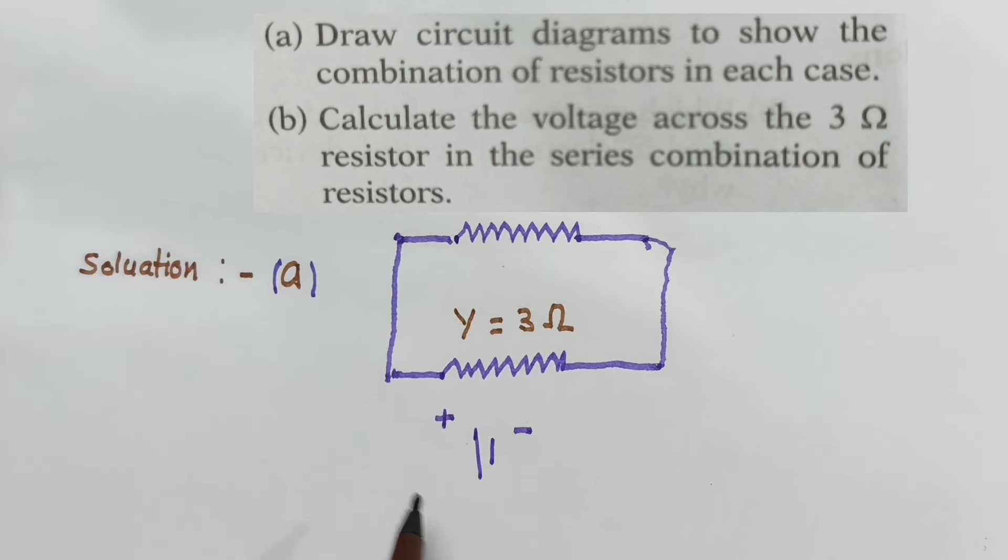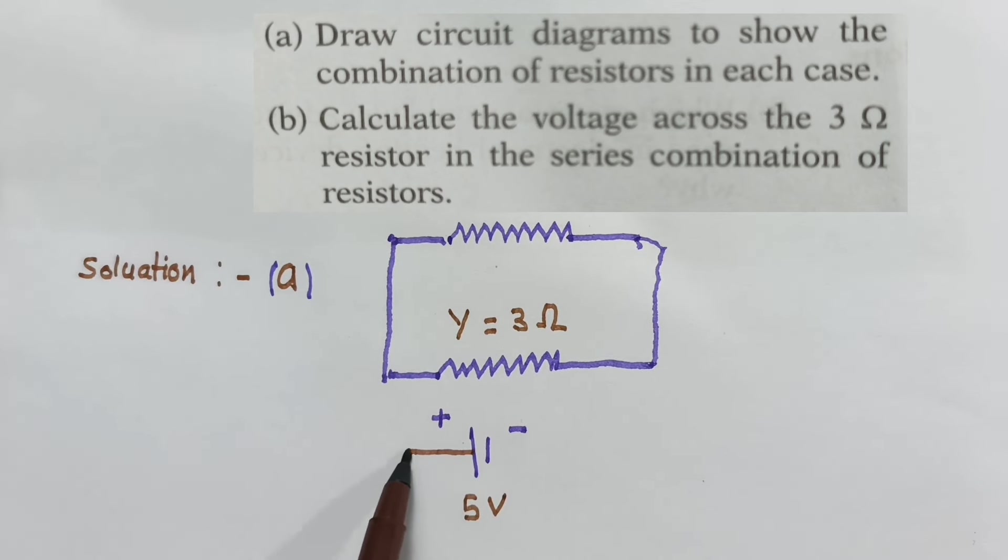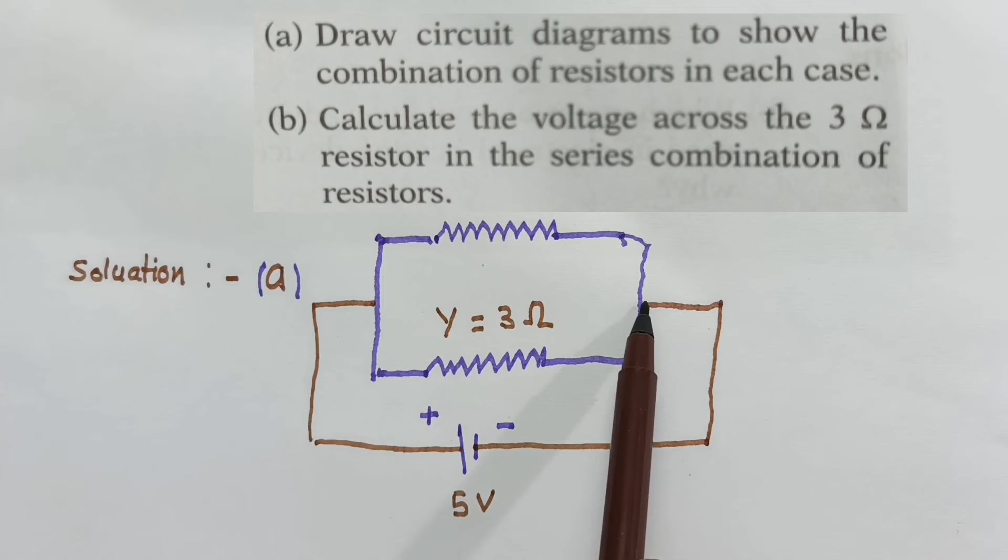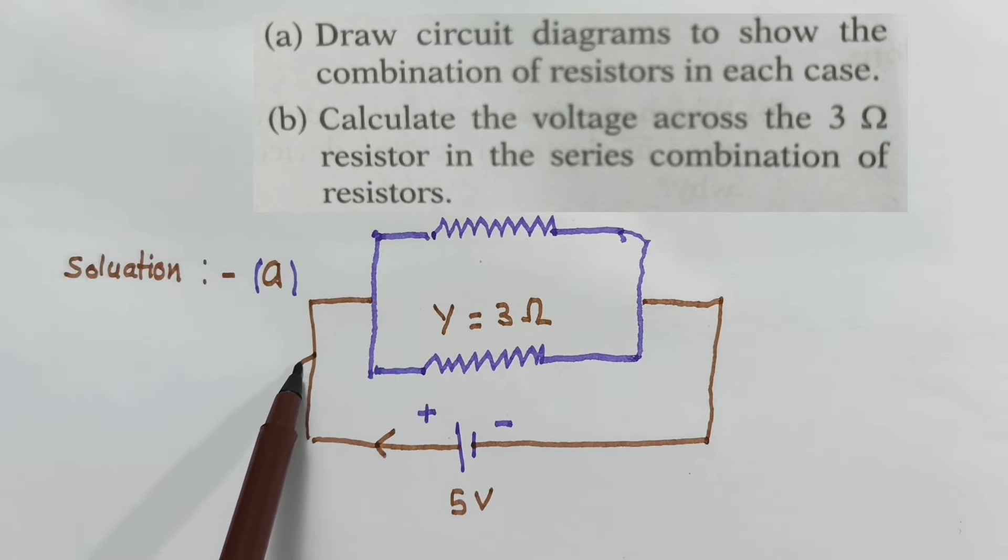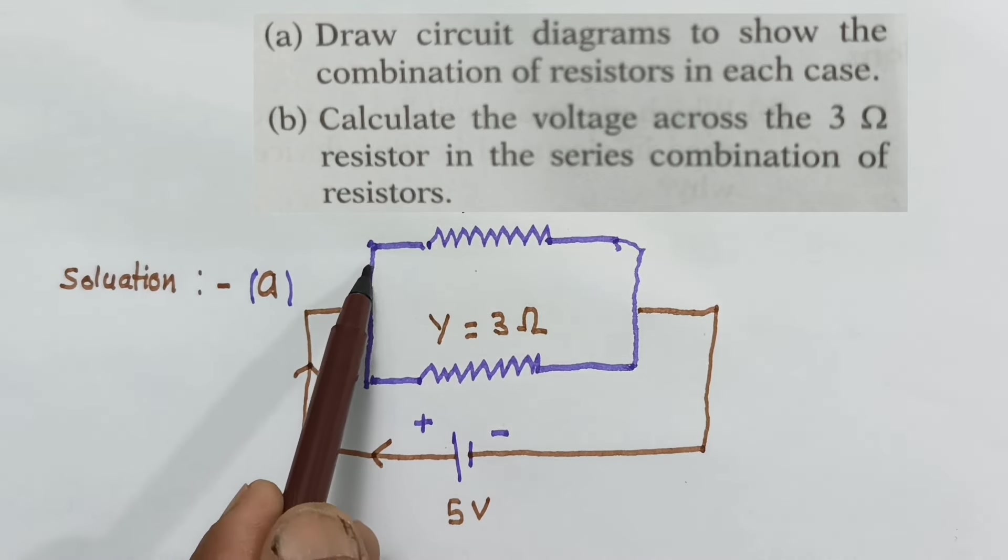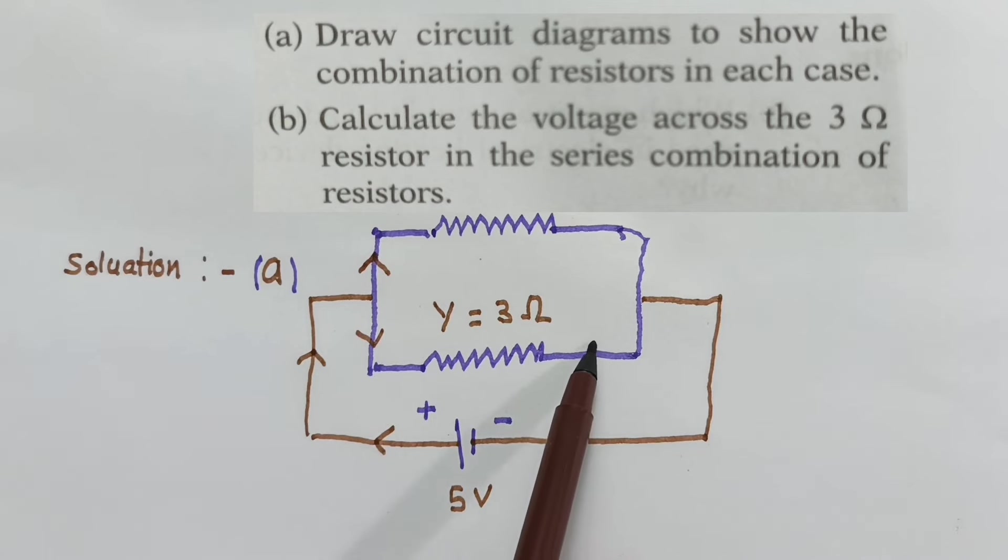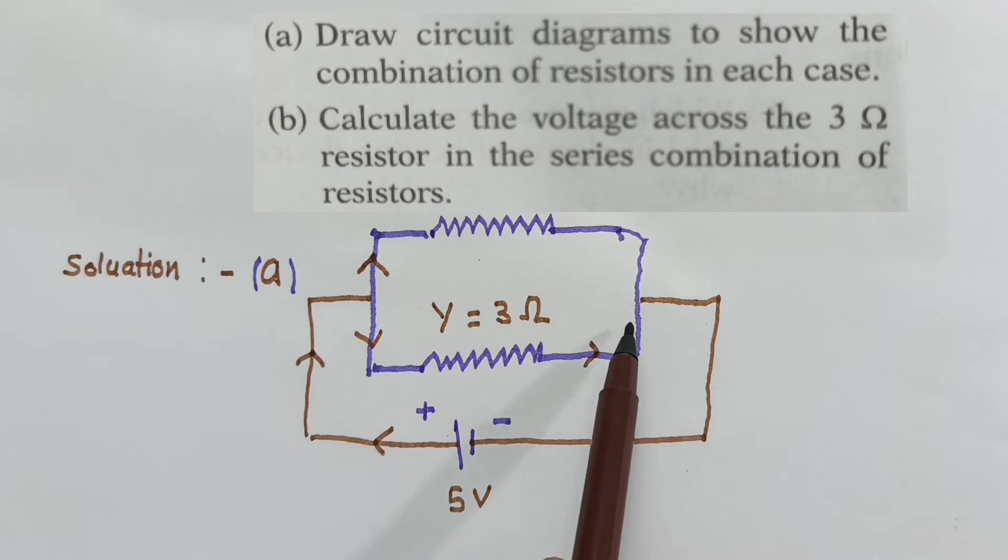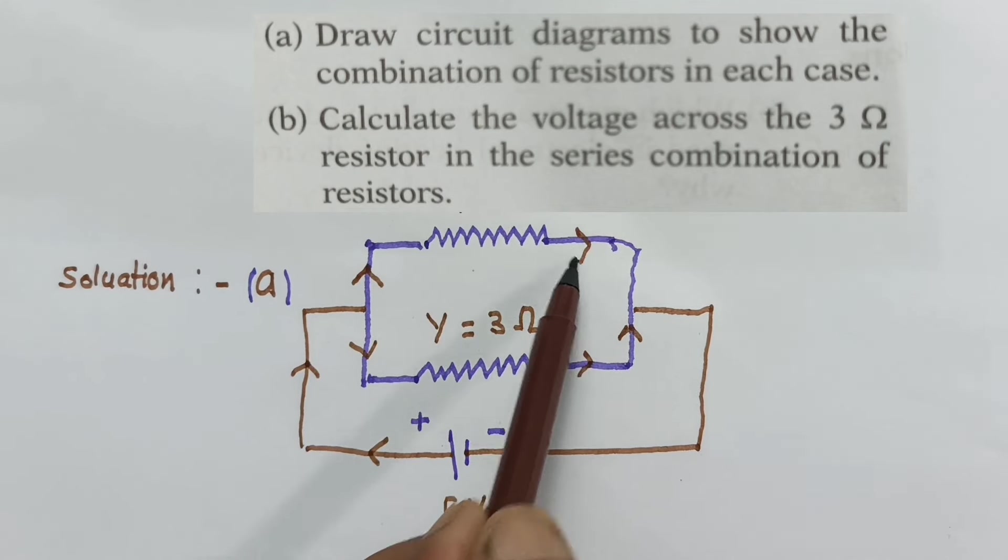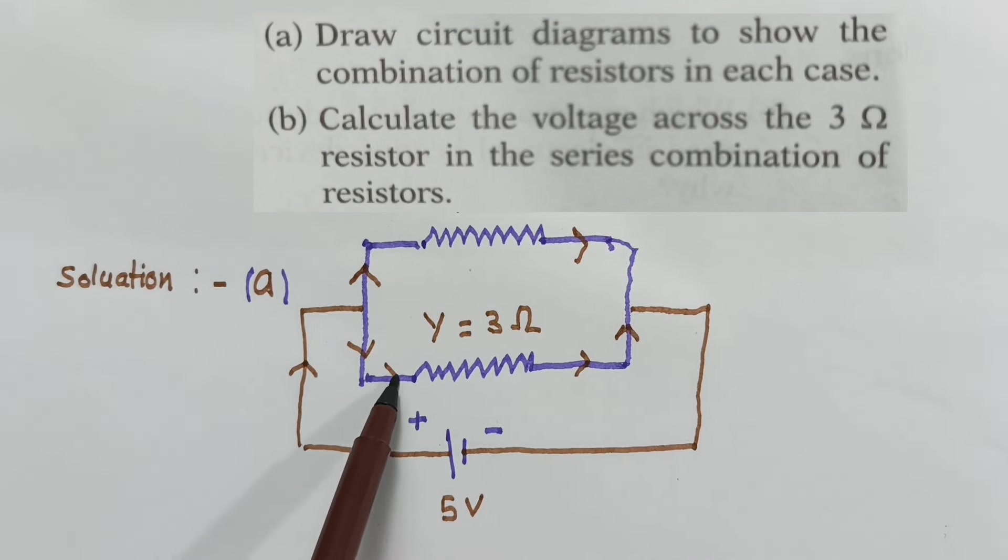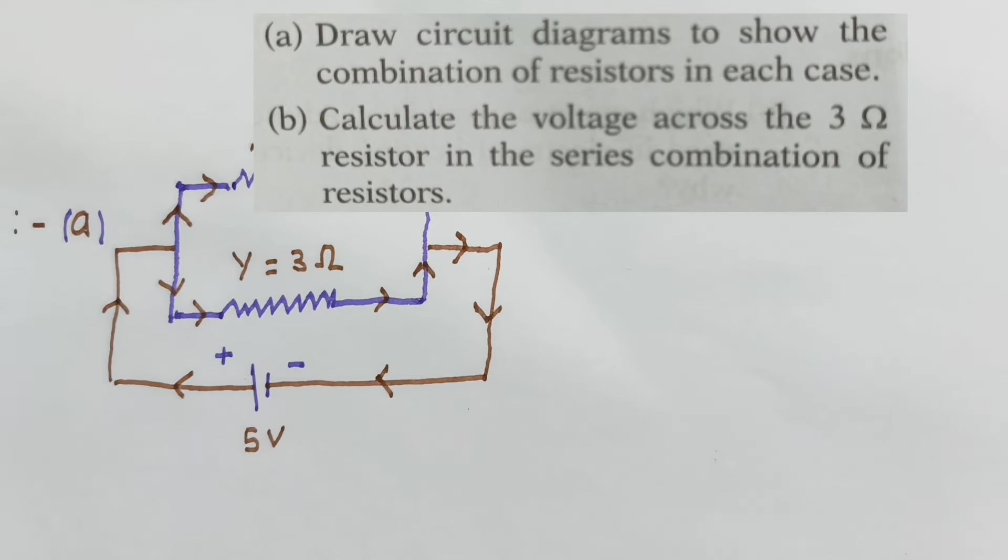This is 5 volts. Now the current flow will be this way. Current flows here, the current will be this way. Here is the current, current will be like this.